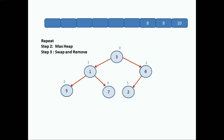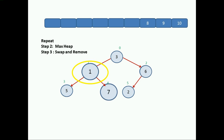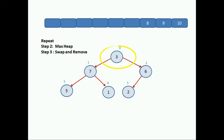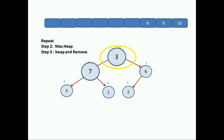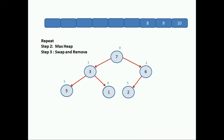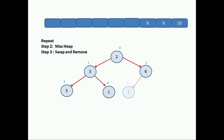Starting from the last sub-tree: 6 as parent with child 2 — it is a max heap. Moving to the next tree: 1, 5, and 7 — not a max heap, so swap 1 and 7. Moving to the root tree at index positions 0, 1, and 2, containing 3, 7, and 6 — parent is 3 which is smaller, so swap 7 and 3. Now it is a max heap. Step 3: swap root with last node — 7 and 2 get swapped and remove the last node. We now have four elements sorted.